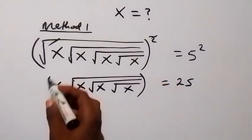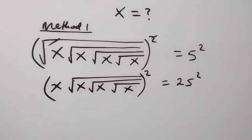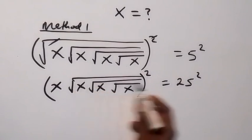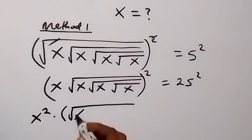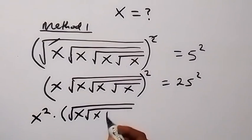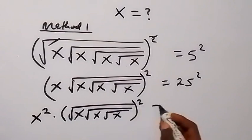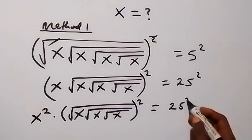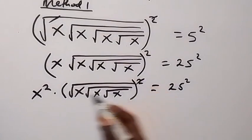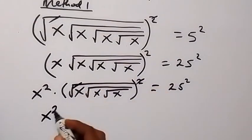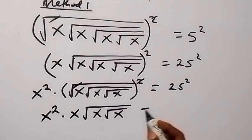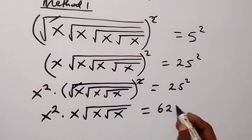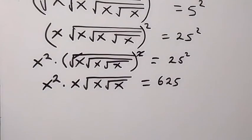We can also square again both sides. The square here will affect x and also this square root, so we have x squared times square root of x, then root x, then root x, which equals 25 squared. That is 25 times 25, which is 625.